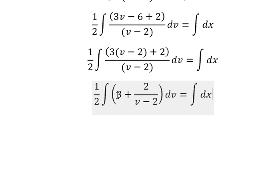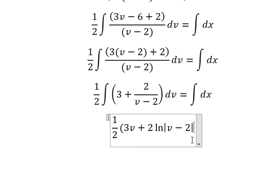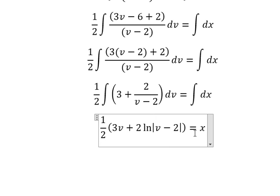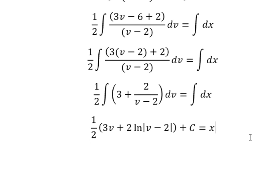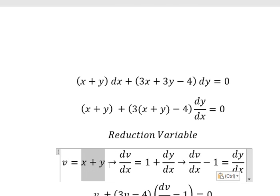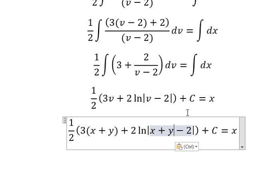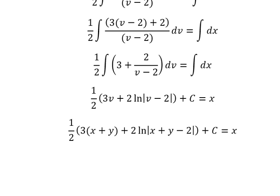Now we have the final answer. The integration of three is three v. The integration of this one is two ln of the absolute value of v minus two. The integration of dx is x, and I will add constant c. Remember that v equals x plus y. This is the final answer. This is the end, thank you for watching.